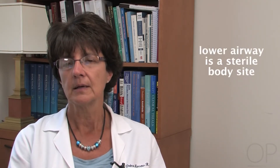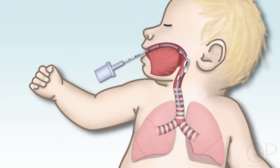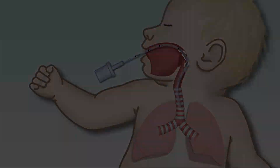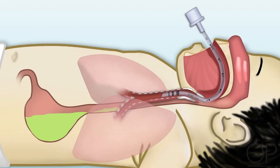In a healthy person, the lower airway is a sterile body site, and the endotracheal tube provides access to the lower airway. Colonized secretions from the subglottic area, which leak into the lower airway around the endotracheal tube, is the primary mechanism of infection. Other sources of contamination include aspiration of fluids from the stomach,